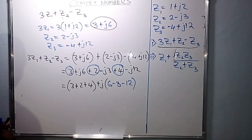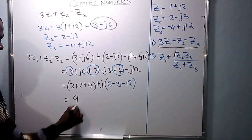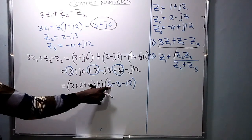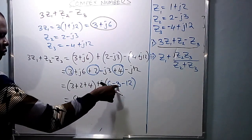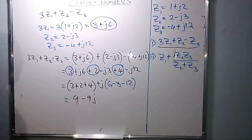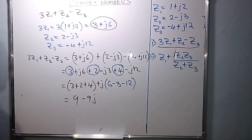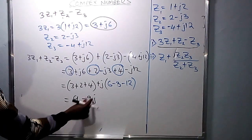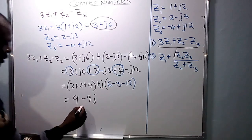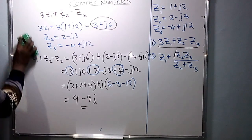Simplify: the real part is 3 plus 2 plus 4, which gives 9. Then simplify the imaginary bracket: 6 minus 3 minus 12. That is 6 minus 3 equals positive 3, minus 12 equals negative 9. So we have negative j9. Therefore the answer to Roman numeral 1 is 9 minus j9.